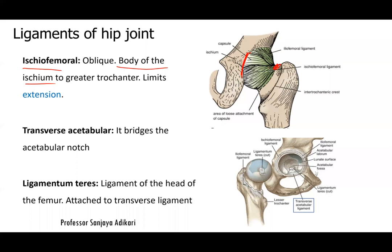Two additional ligaments relate to the hip joint. The transverse acetabular ligament fills the acetabular notch — the gap in the acetabulum. The ligamentum teres attaches the head of the femur to the acetabulum and to the transverse acetabular ligament, keeping the head in position. In childhood, the ligamentum teres also carries some blood supply to the head of the femur.